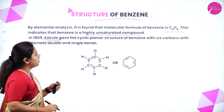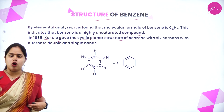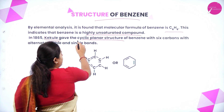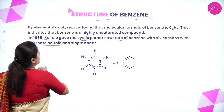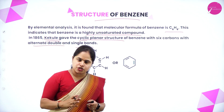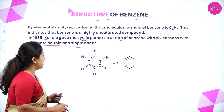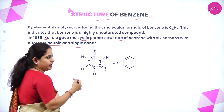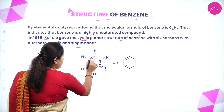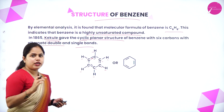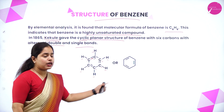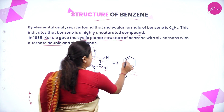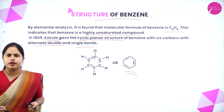In 1865, Kekulé gave the cyclic planar structure of benzene. All the bonds lie in the same plane, and it is cyclic with six carbon atoms with alternate double and single bonds. It has six carbon atoms and six hydrogen atoms with alternate double bonds — one double bond, next single bond, double bond, single bond, double bond. This is the complete structural formula, and you can see it also in the condensed bond-line representation.